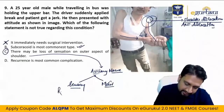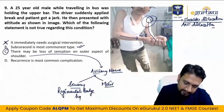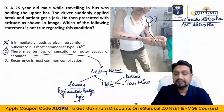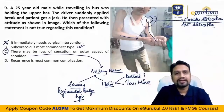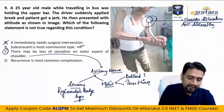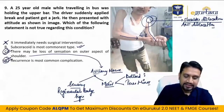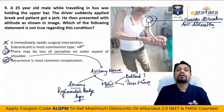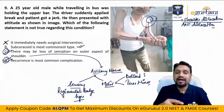Axillary nerve involvement leads to sensory loss — the regimental badge sign. For the motor component: deltoid and teres minor are affected. If deltoid is affected, abduction from 15 to 90 degrees is impaired; if teres minor is affected, external rotation is impaired. Recurrence is the most common overall complication of anterior shoulder dislocation, related to Hill-Sachs and Bankart lesions. Axillary nerve injury is the most common acute complication.